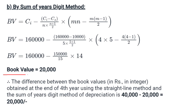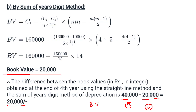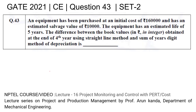By putting all the terms into the sum of years digit method formula, the book value at the end of the fourth year comes out to be 20,000 rupees. The difference between the two book values is: 40,000 (straight line method) minus 20,000 (sum of years digit method) = 20,000. So our answer is 20,000 rupees.